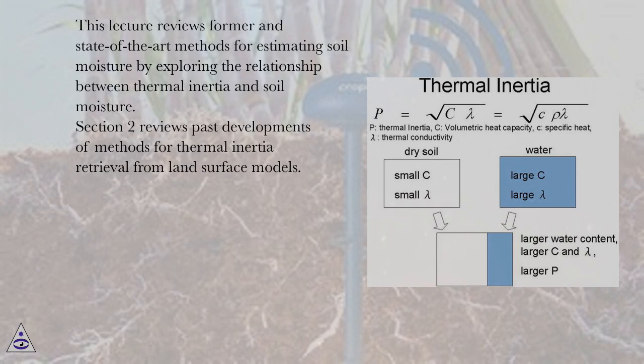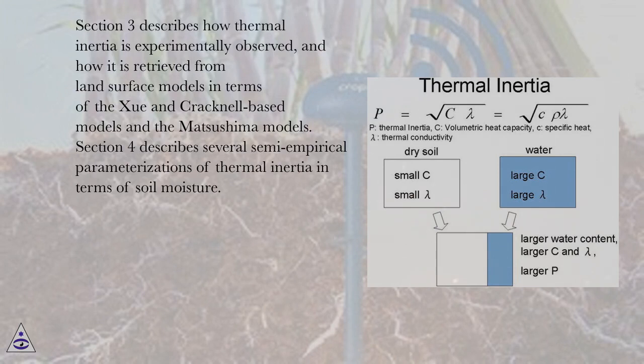Section 2 reviews past developments of methods for thermal inertia retrieval from land surface models. Section 3 describes how thermal inertia is experimentally observed, and how it is retrieved from land surface models in terms of the Shui and Cracknell-based models and the Matsushima models.